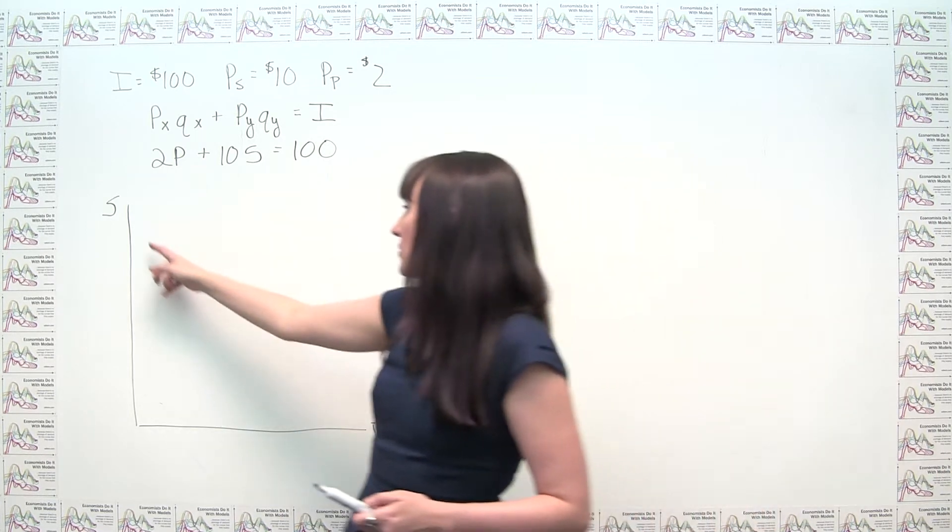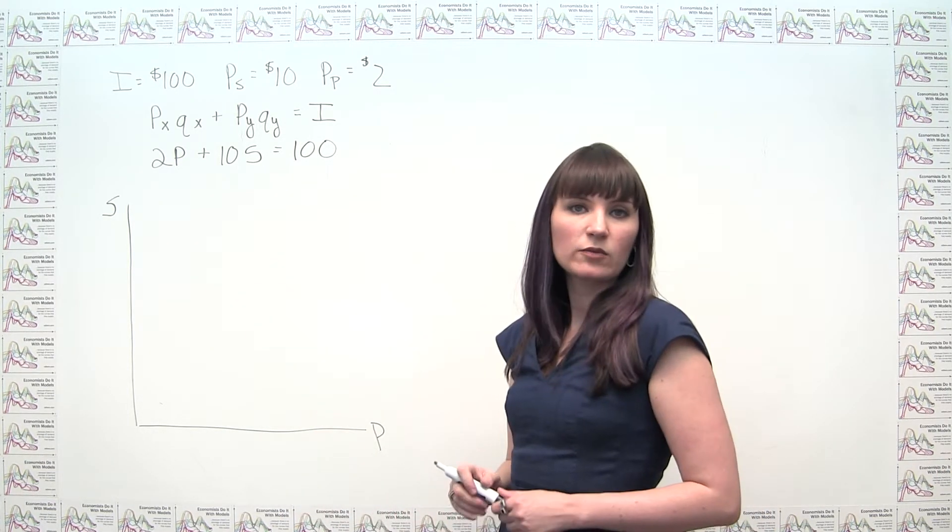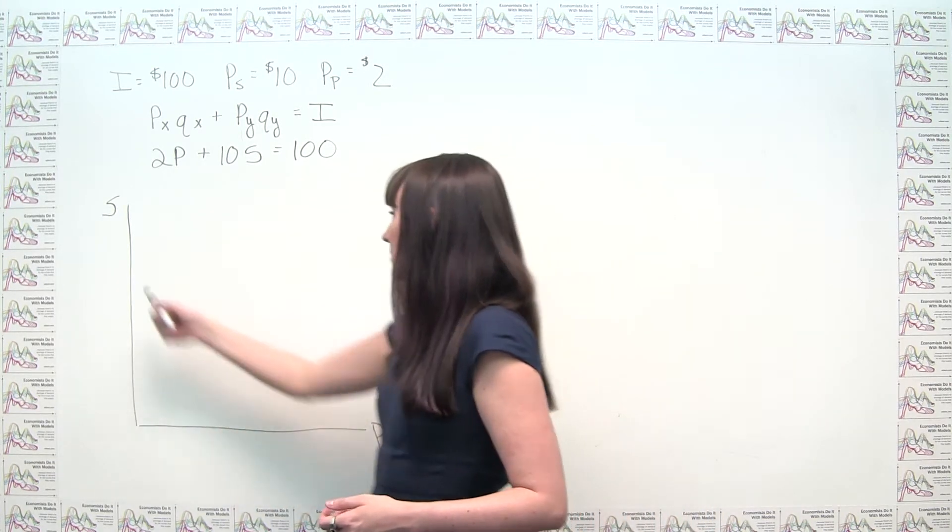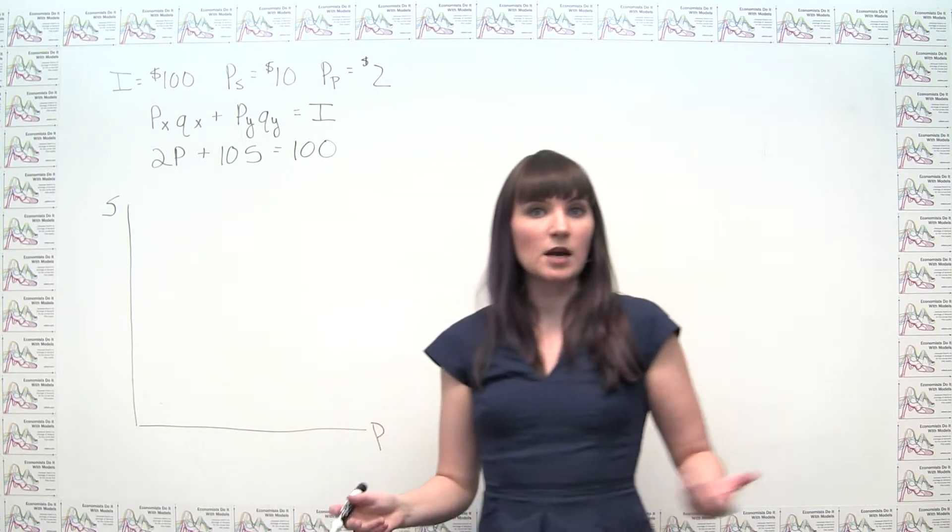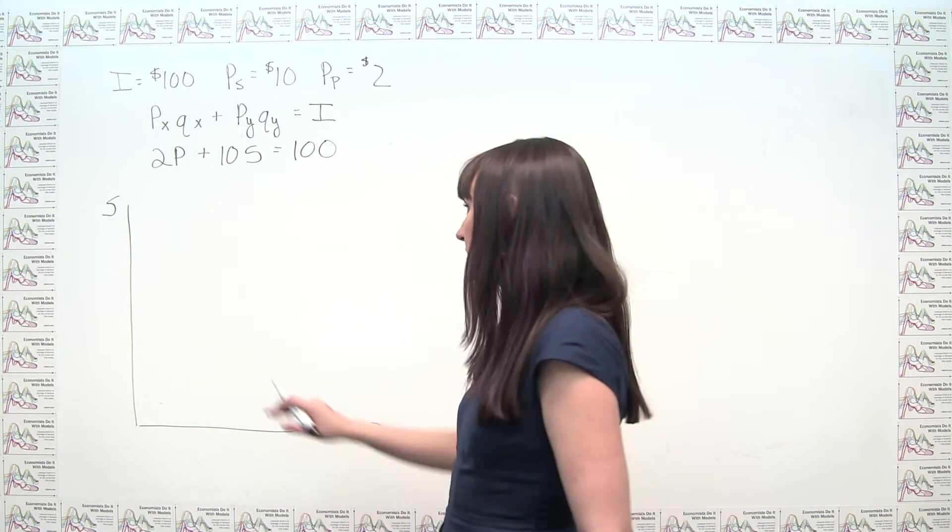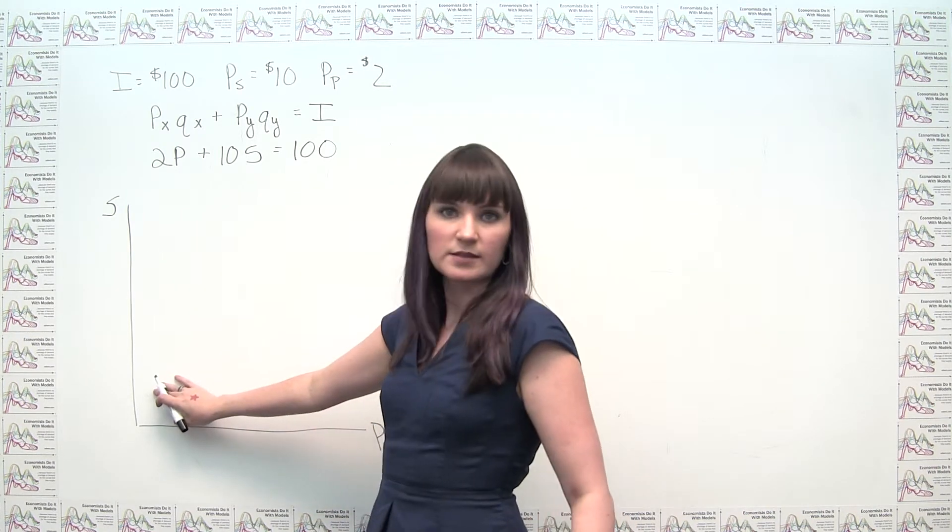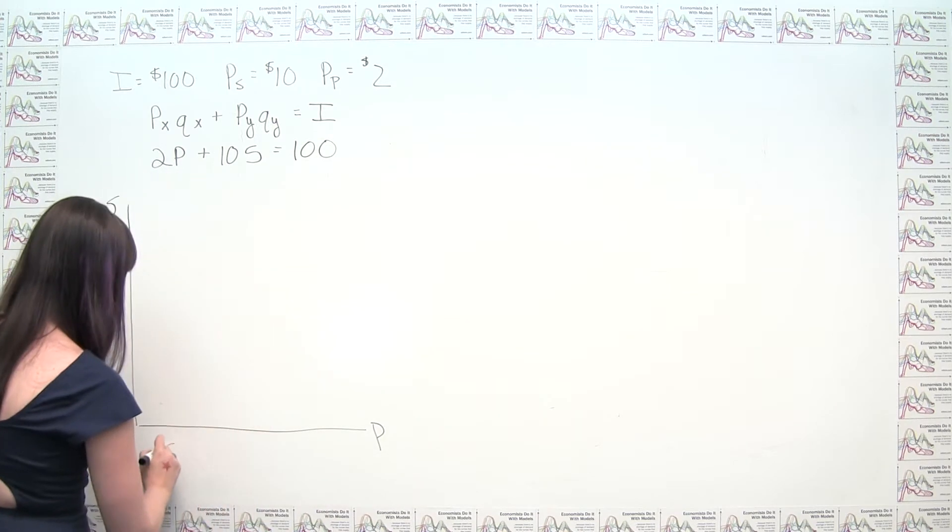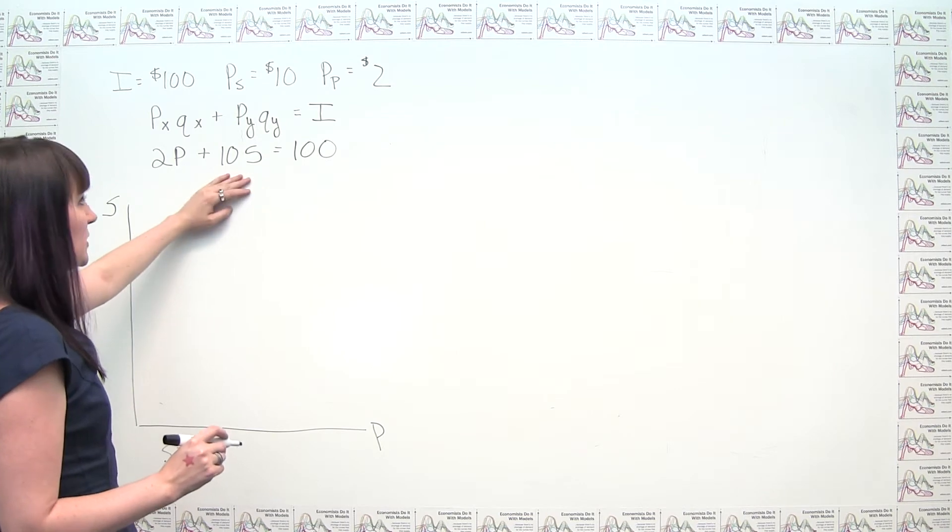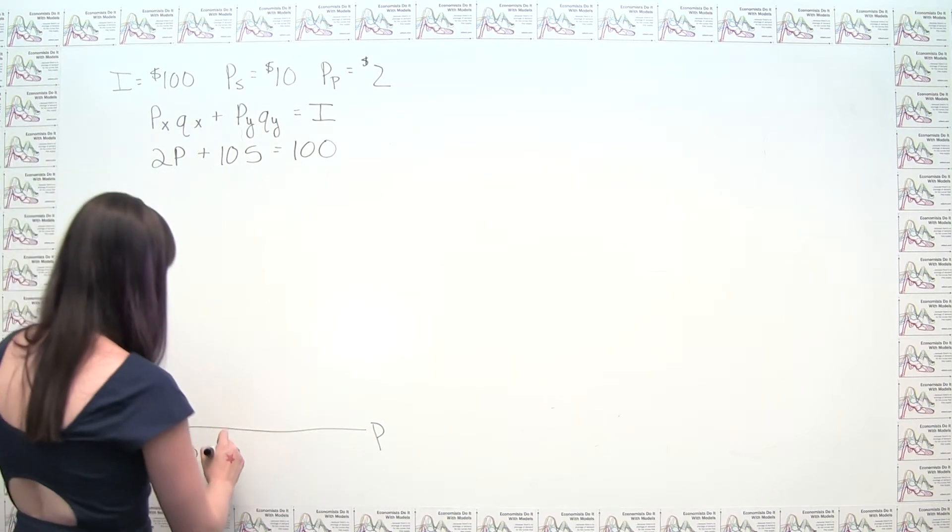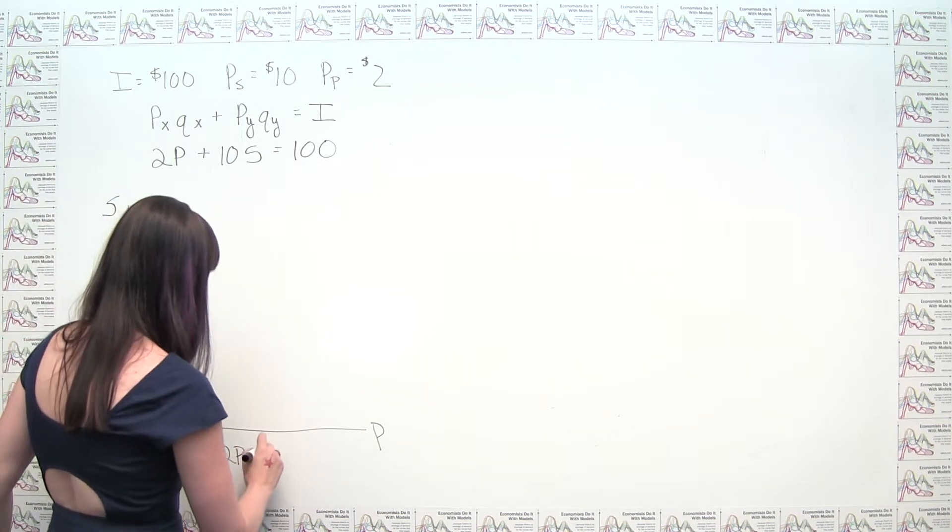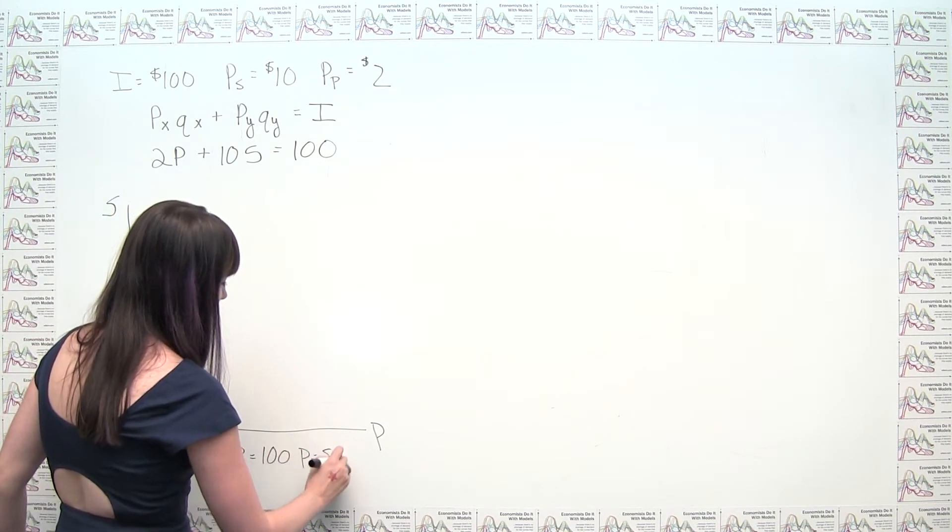You can see this is essentially 2p plus 10s equals 100. We're going to get a line that's sloping down and to the right, and because it's going to be a line, we can just figure out where it hits the axes and then connect the dots. So here, if we were going to think about where it hits the p-axis, this is just going to be where s is 0. If we said s is 0, then this whole part of our equation drops out, and it has to be the case that we're spending all of our money on potatoes. So 2p has to equal 100, or p has to equal 50.